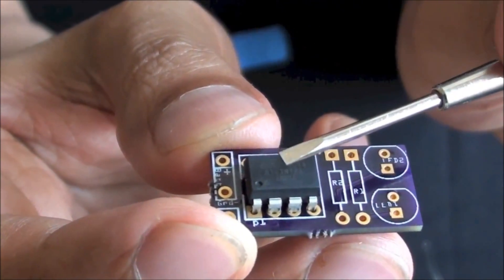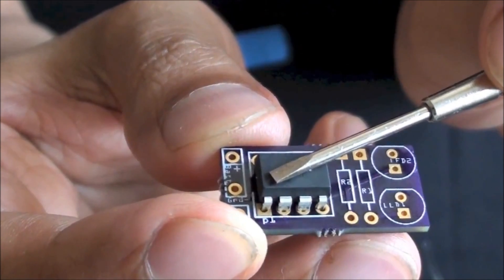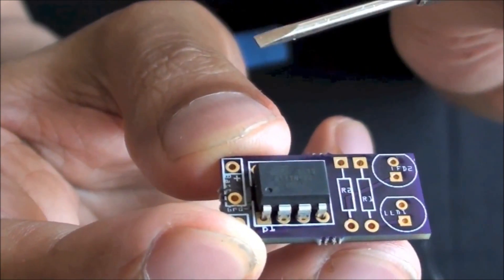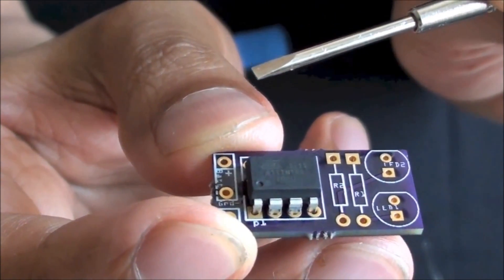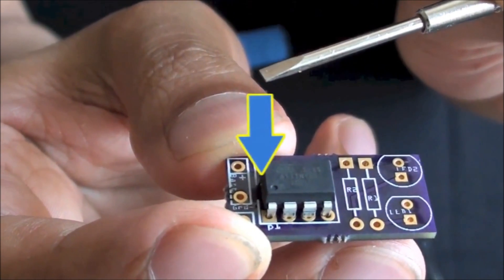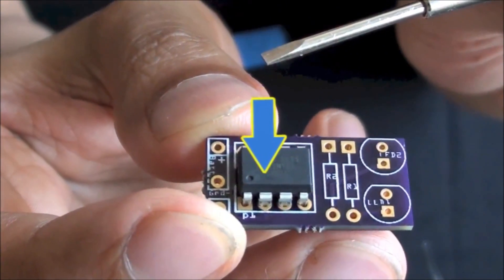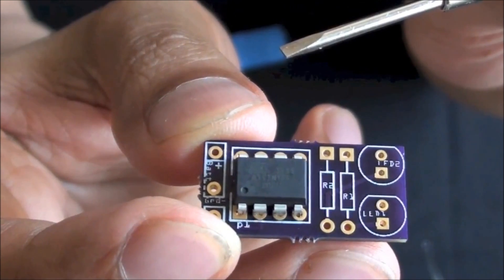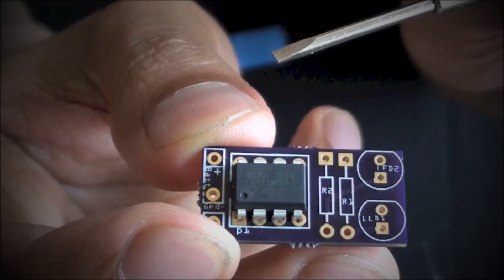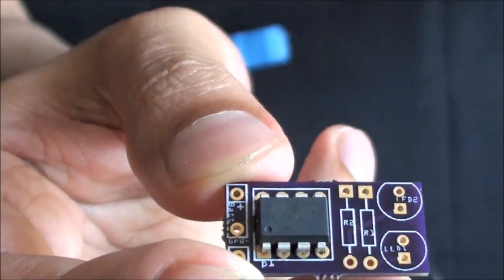On the top of the microcontroller, you will see an indented circle. This is above the pin that will be aligning with the square pin hole labeled P1 on the PCB board. It should look like this. Once the microcontroller is in place, we can proceed to solder.